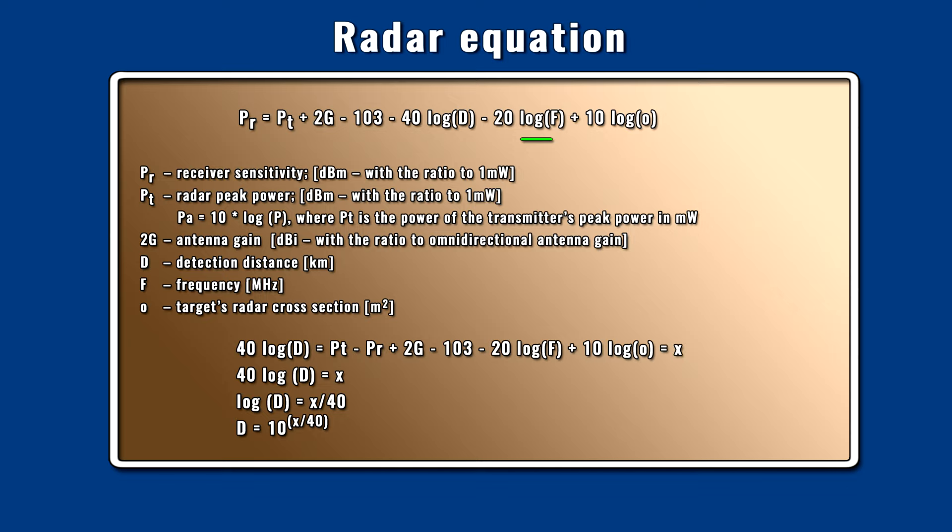Another factor in target detection range is the operating frequency of the radar, which is important due to propagation loss. At longer wavelengths, the propagation loss is lower, but it requires a physically larger antenna size to form a narrow beam compared to a decimeter or centimeter wavelength one. Finally, the last main factor is the target itself — its radar cross-section, a physical property of the target that is aspect dependent. If all parameters are known, the detection distance can be calculated by rearranging the equation. If only the radar cross-section of the target is the variable, it is possible to examine how detection distance changes as the radar cross-section changes.